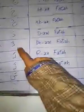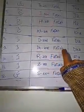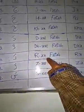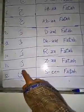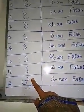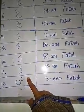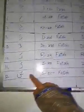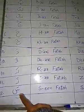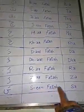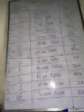The ninth is Dhal, having a short diagonal stroke on it — Dhal Fatah means 'dha'. The tenth is Ra, with a short diagonal stroke — Ra Fatah means 'ra'. The eleventh is Zay, having a short diagonal stroke on it — Zay Fatah is called 'za'. The twelfth is Seen, having a short diagonal stroke — Seen Fatah means 'sa'.